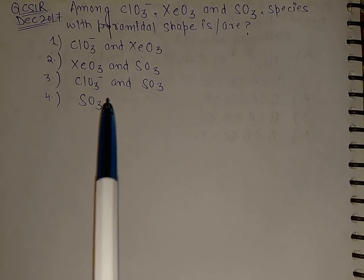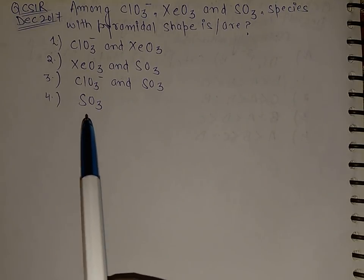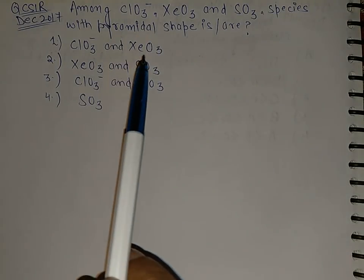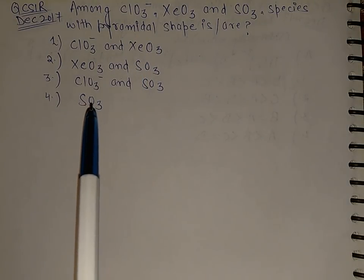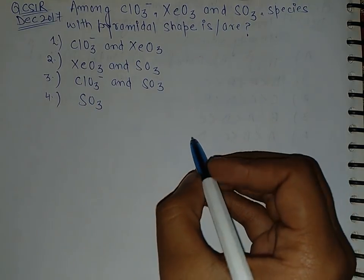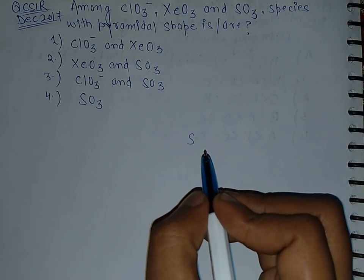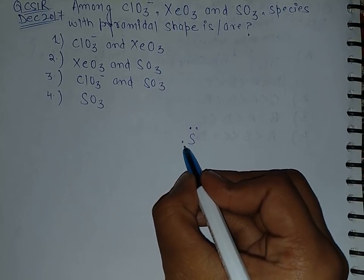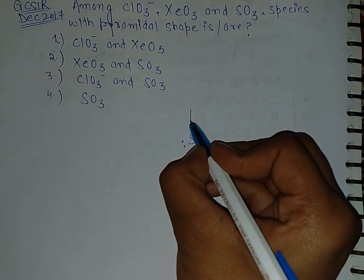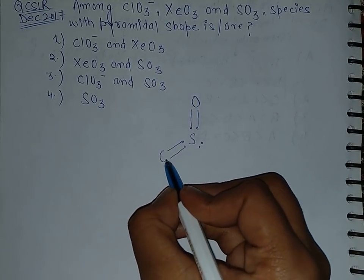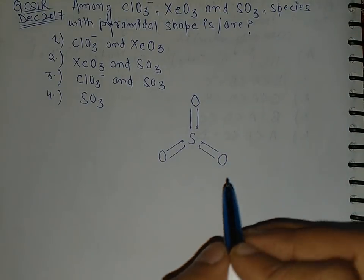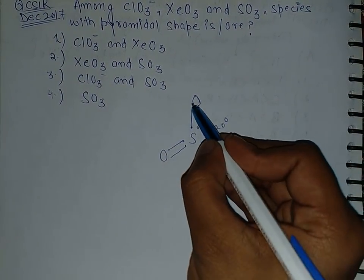We have been studying from Class 12 that SO3 has a planar shape. Sulfur has six valence electrons, and oxygen takes two electrons for bonding. So this is the shape of SO3 — it is a planar structure and the angle is 120 degrees. This is a very basic shape everyone knows.